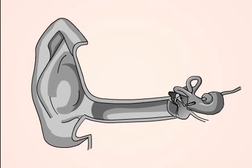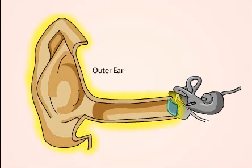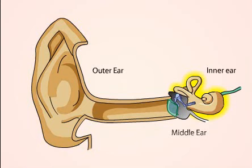The ear is responsible for translating variations in air pressure, whether from speech, music, or other sources, into the neural activity necessary for our perception and interpretation of sound. The ear can be divided into three principal sections: the outer ear, the middle ear, and the inner ear. Each of these parts performs a specific function in processing sound information.